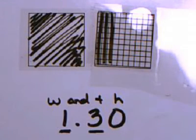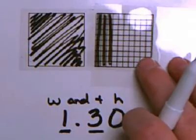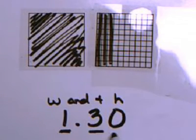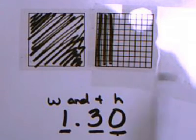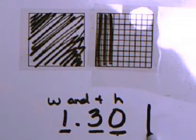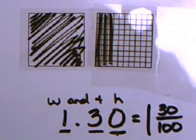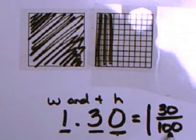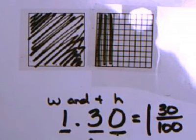Students need to know that 30 hundredths and 3 tenths are actually the same amount shaded, but that 30 hundredths needs to look a little bit different because I'm shading hundredths instead of tenths. Students just need to recognize that this box needs to be split into 100 pieces and not 10 pieces. I can also represent this decimal as a fraction: I still have 1 whole, but now instead of 3 tenths, I have 30 out of 100 pieces shaded. So this is 1 and 30 hundredths as a decimal and as a fraction.